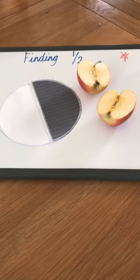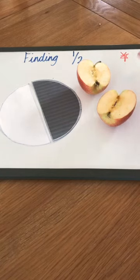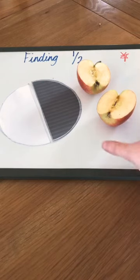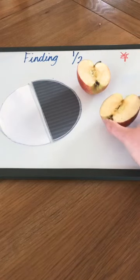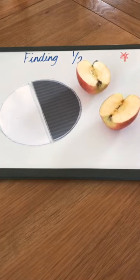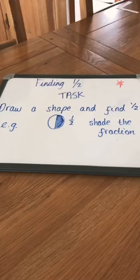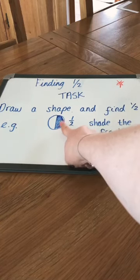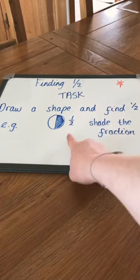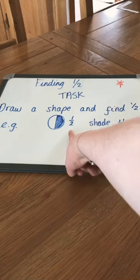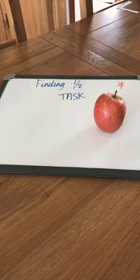The task today for one star challengers — that's for finding half — you need to take an object and split it in half. Make sure it's in two equal pieces to make the halves. Or you can draw your own shapes and colour one half in. So your task is to draw a shape, find half, shade the fraction in, and then write the fraction beside it so I know that you know what half looks like. The other option is to get an object, for example an apple, and make that into two halves.